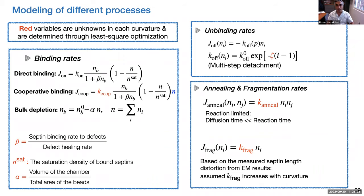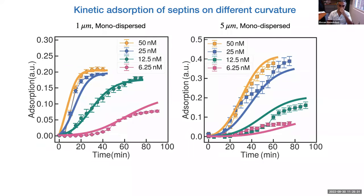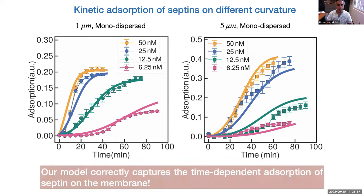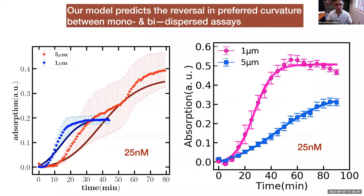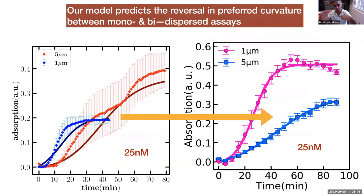The model does a nice job predicting the overall absorption-versus-time behaviors. It also gives a length distribution, which we can't directly measure experimentally, but it appears to capture monodispersed behavior well. Importantly, with the same set of parameters, the model can capture the transition from monodispersed to bidispersed assays and the switching of curvature preference between one and five microns.